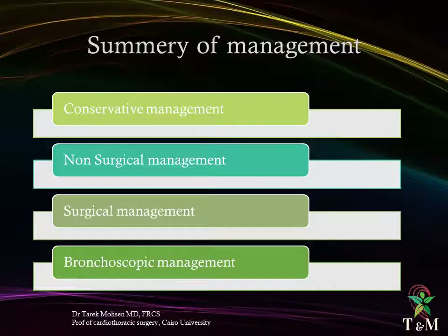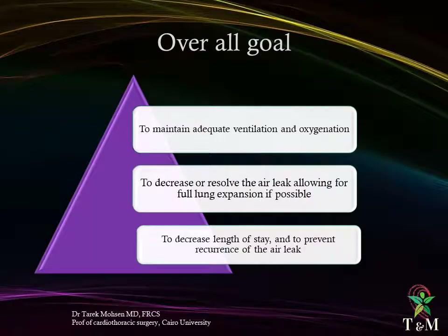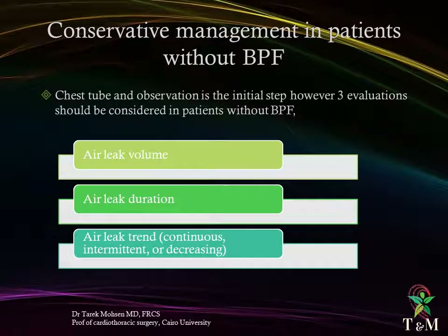Summary of possible management options includes: conservative, non-surgical, surgical, and bronchoscopic approaches. The overall goals are to maintain adequate ventilation and oxygenation, to resolve the air leak allowing for full lung expansion if possible, to decrease length of hospital stay, and to prevent recurrence of the air leak. In this lecture we will discuss management related to a leak without bronchopleural fistula.